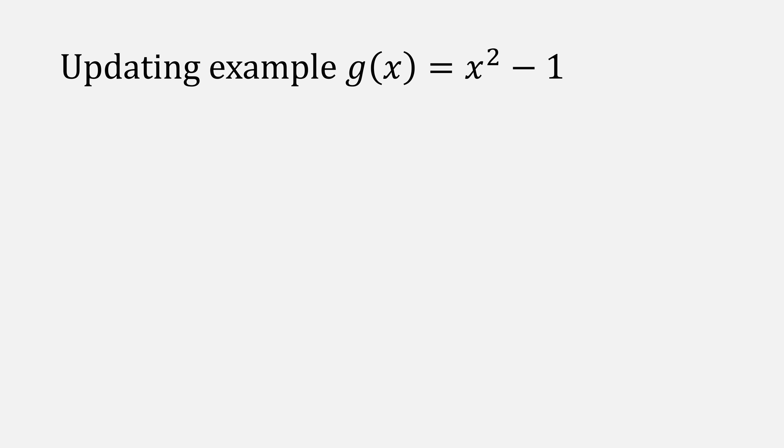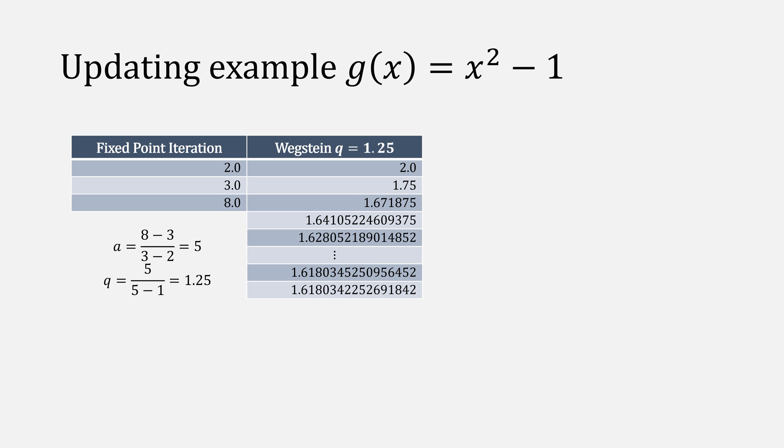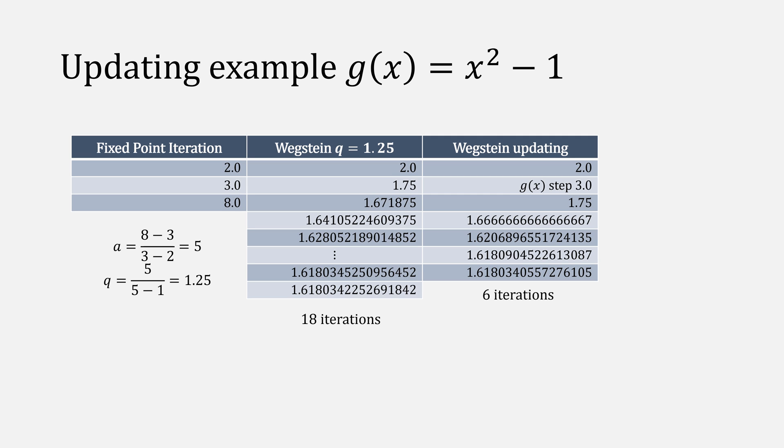Let's look at an example of updating q at every iteration compared to a constant. For the constant, we do need three iterations of fixed point to give us the value of 1.25. We plug that into Wegstein's, it takes 18 iterations to find the root. If we instead use an updating q, it only takes six iterations to find the root.